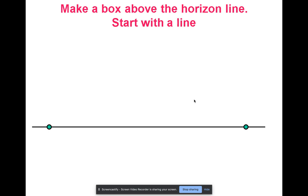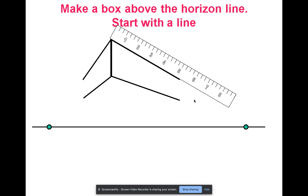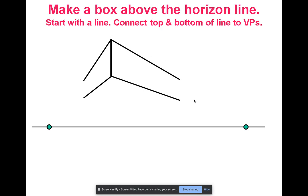Now we want to do one above the horizon line. Again, we start with a line. The top and the bottom of the line go back to the vanishing points. Decide how long we want our box to be. Start in the center, pull it along keeping it parallel, draw our ending line.